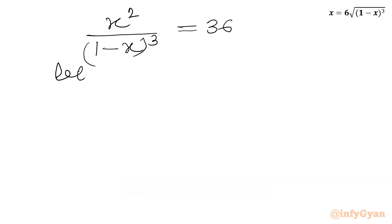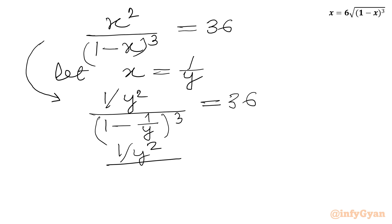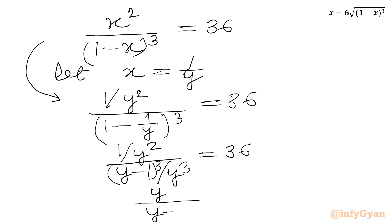Now we will use substitution. Let us consider x equals 1 over y. So we write our equation as (1/y)² over (1 minus 1/y)³ equals 36. This becomes (1/y²) over ((y minus 1)/y)³ equals 36, which simplifies to y over (y minus 1)³ equals 36.